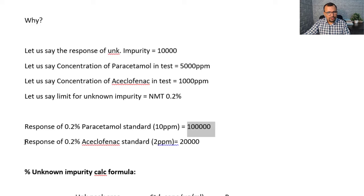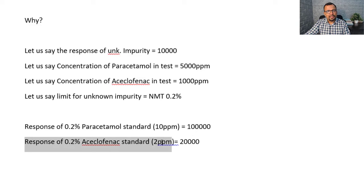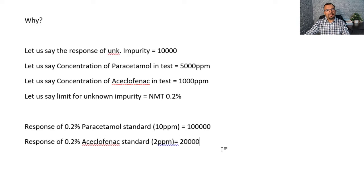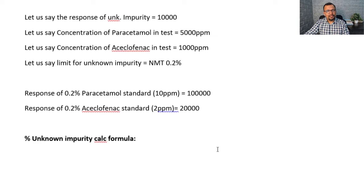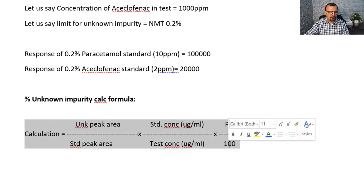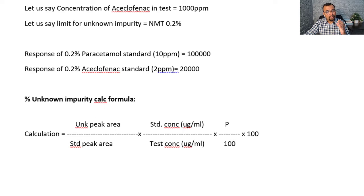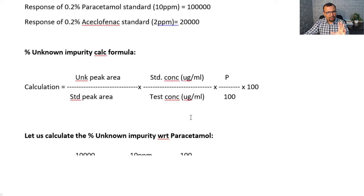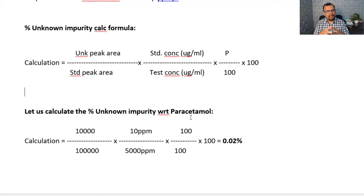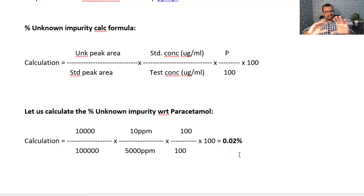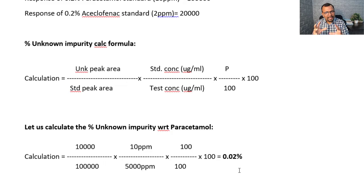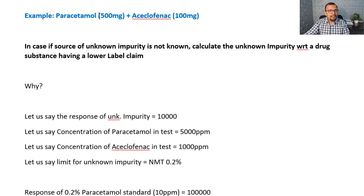Similarly, the 0.2% aciclophenac standard solution corresponds to 2 ppm, and the response is found to be 20,000. Using the calculation formula for percent unknown impurity with respect to paracetamol, I found that 0.02% is the impurity concentration, by substituting the values into the above calculation formula using the paracetamol API.